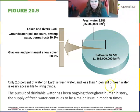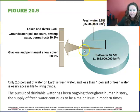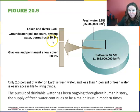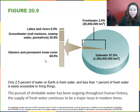Salt water makes up 97.5% of our earth's water, while freshwater is only 2.5%. Of that 2.5%, only 0.3% is lakes and rivers; groundwater including soil moisture, swamp water, and permafrost is about 30.8%; and glaciers and permanent snow cover make up 68.9%. The pursuit of drinkable water has been an ongoing problem throughout human history, and the supply of freshwater continues to be a problem in modern times — so we must protect this small 2.5% chunk.